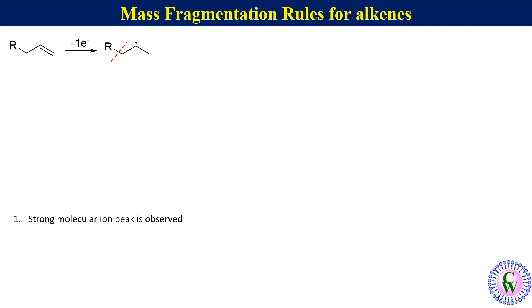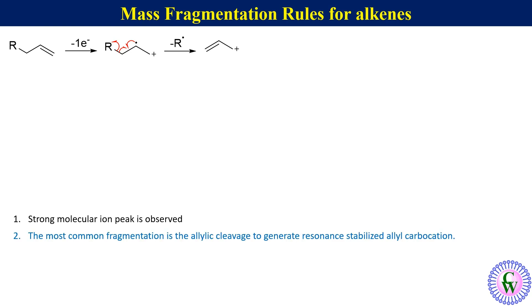The most common fragmentation is the cleavage of an allylic bond. This can be shown like this to generate a resonance-stabilized allylic carbocation. Thus the second rule is that the most common fragmentation is allylic bond cleavage.